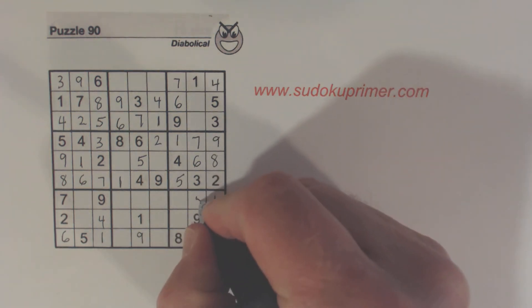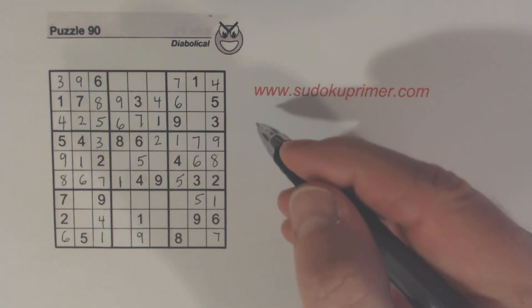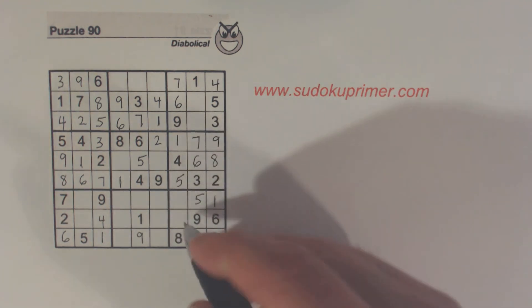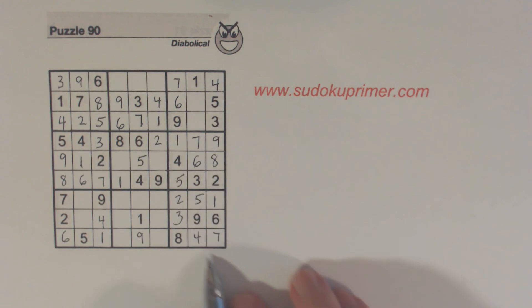Now we fill in a 5 there. Now we're missing 3 numbers here. 2, 3, 4. 2, 3, and 4. There's a 4 in that column already. So those are pretty straightforward.